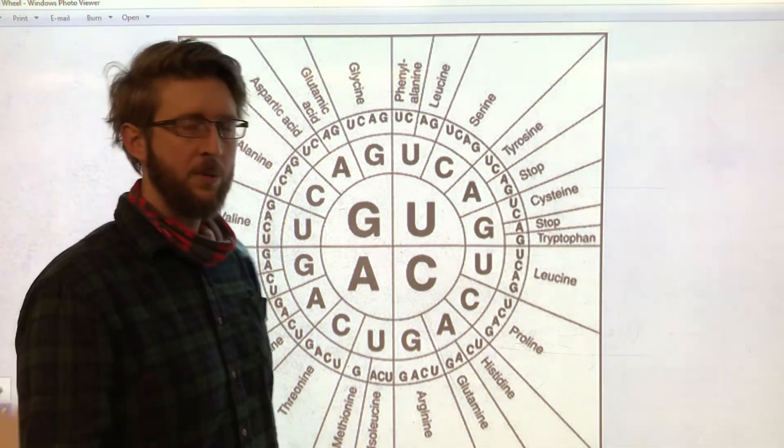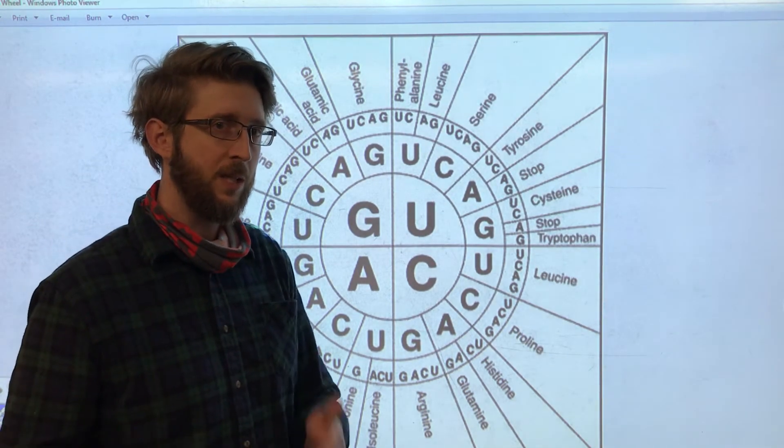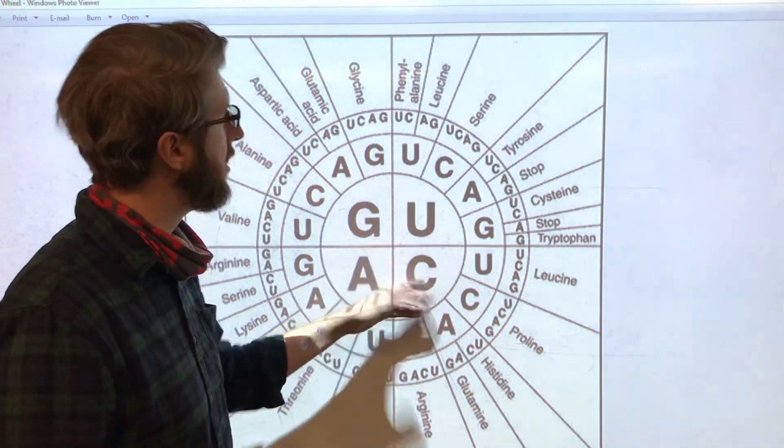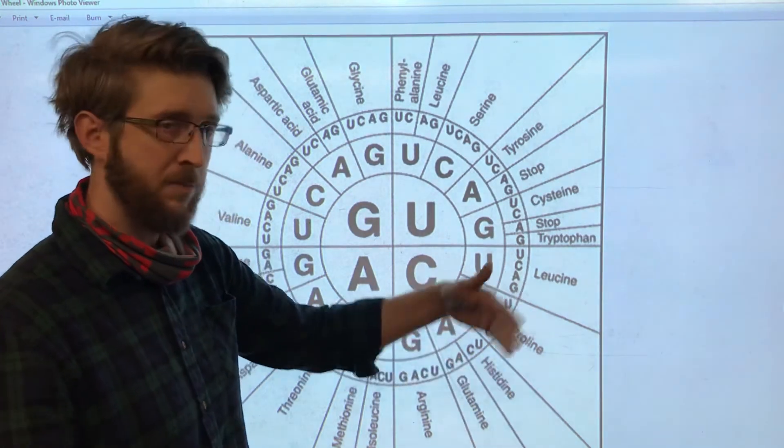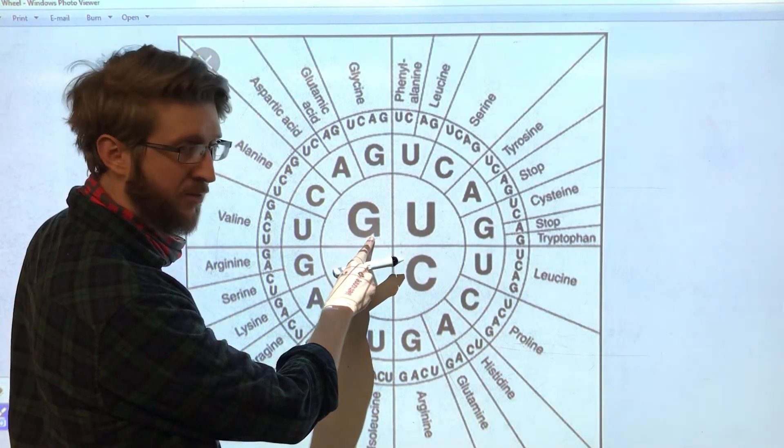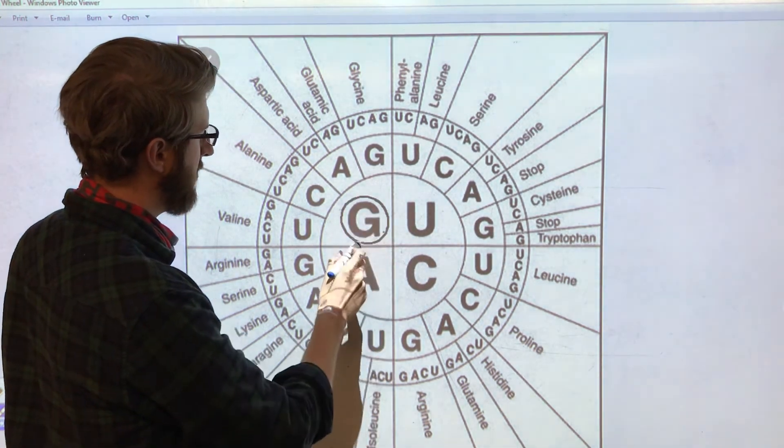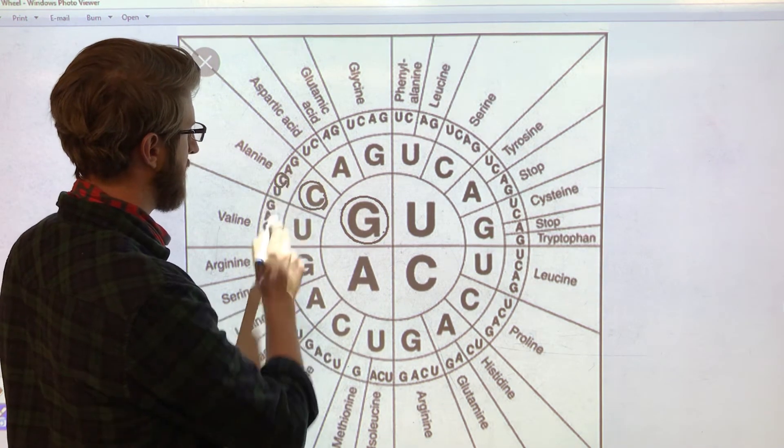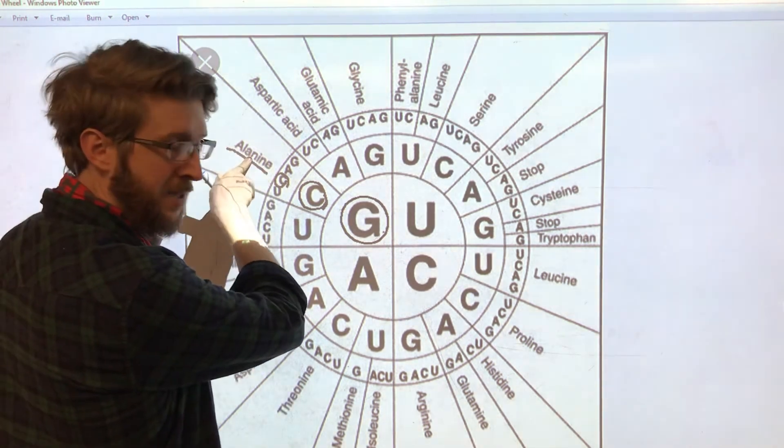So let's remember GCC. In order to determine what amino acid the codon GCC is going to make, we can use this chart. This is a list of all the 20 amino acids that are found in nature. We start in the middle and find the first letter in the middle, G, then we find the next letter, C, and the next letter, C.